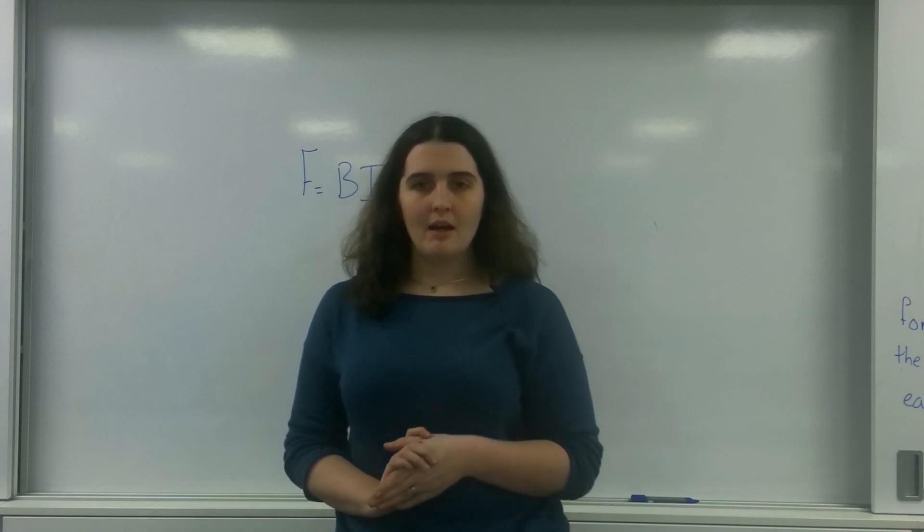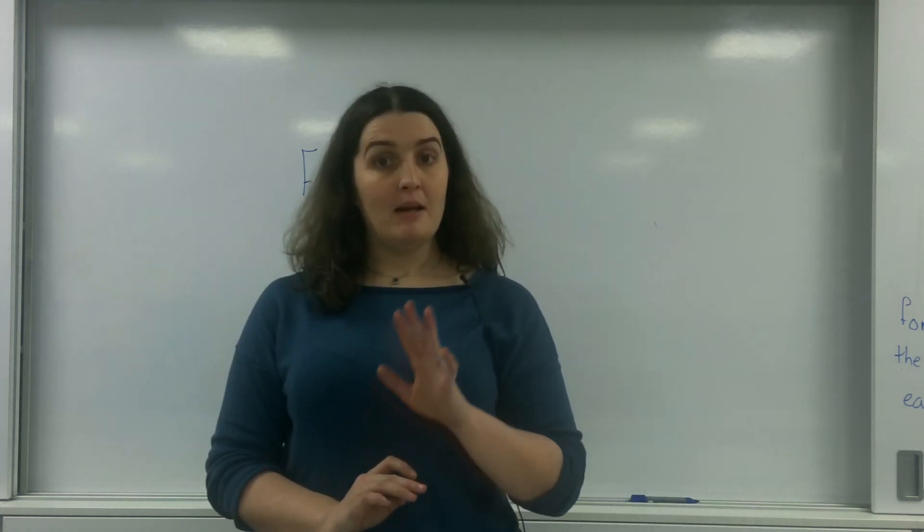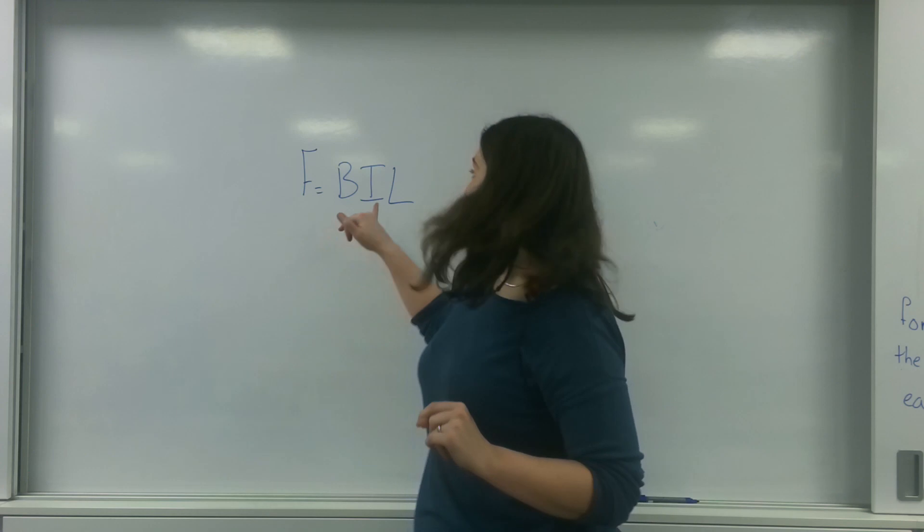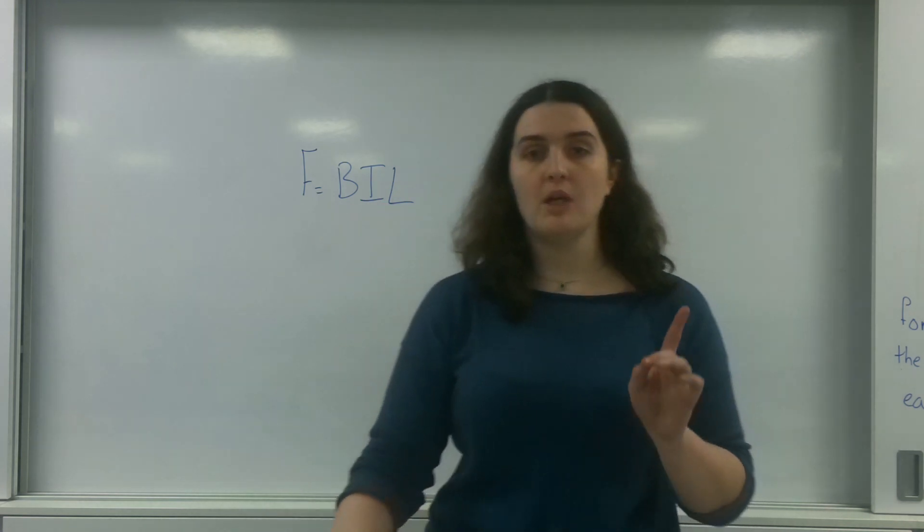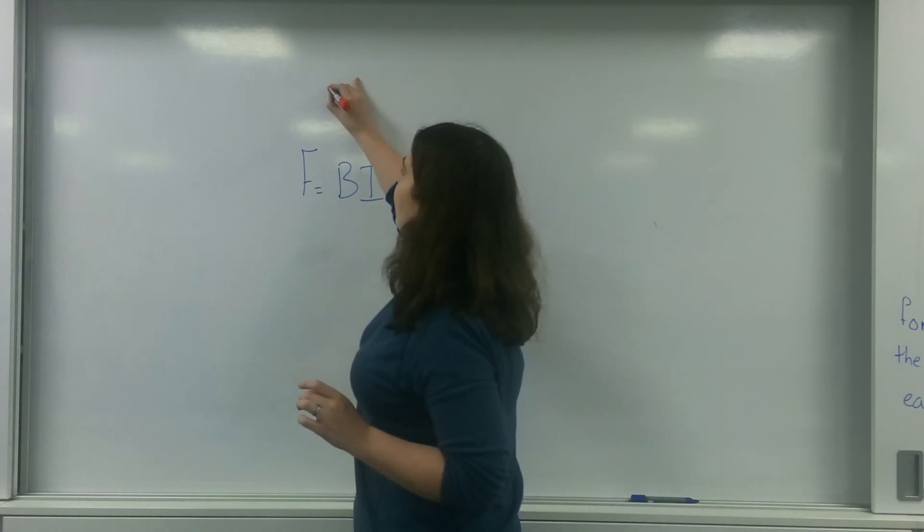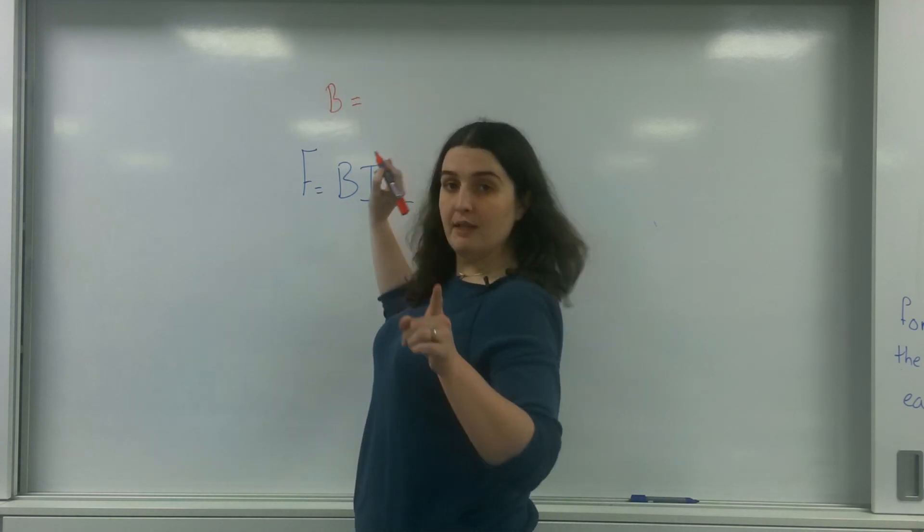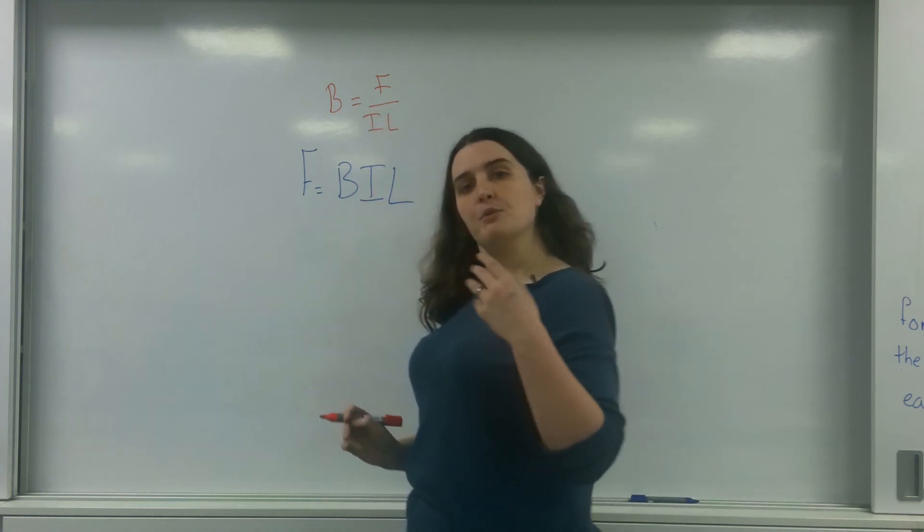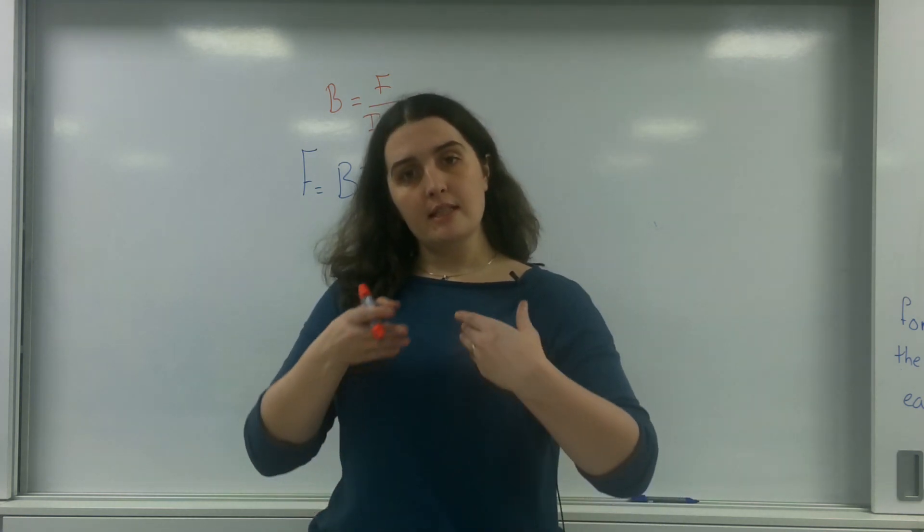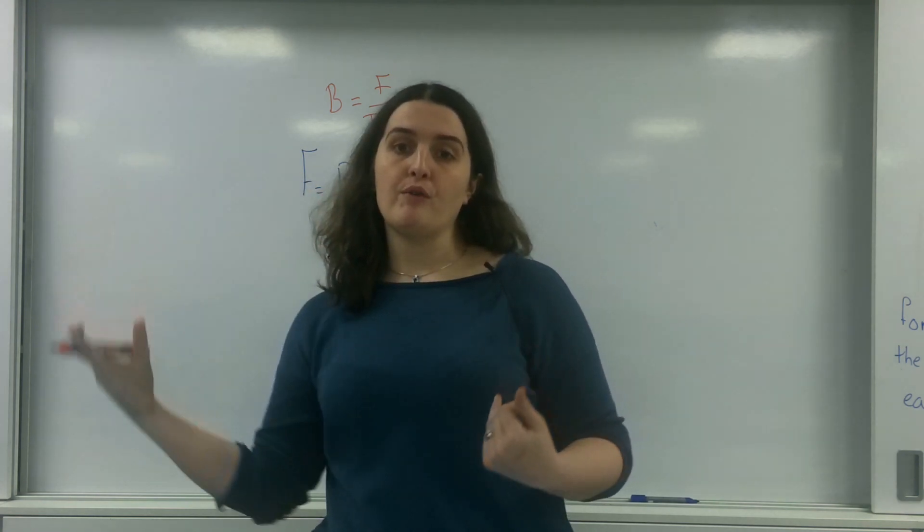The force in a magnetic field is represented by the formula B times I times L. This comes from the idea that magnetic field strength B is the relationship between force and the property of the field, which is a moving charge. This is the current going over the length.